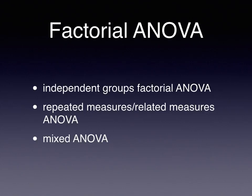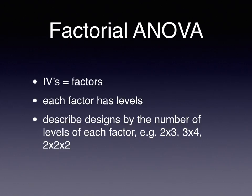You probably remember from undergrad, if you studied factorial ANOVA there, that when you talk about factors, you're actually referring to independent variables. So different independent variables in a factorial design we call different factors. You could call them factors in a one-way design as well — the independent variable there could also be referred to as a factor.